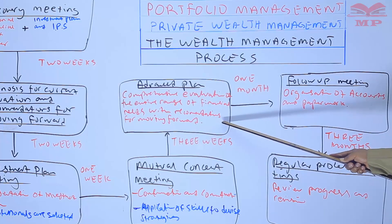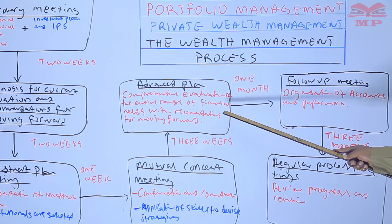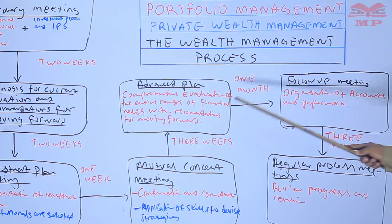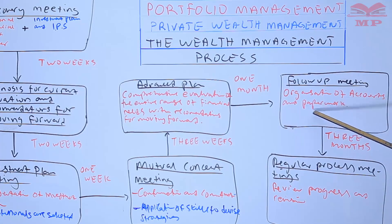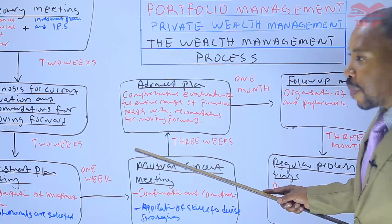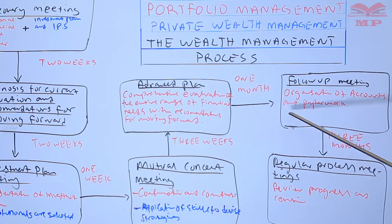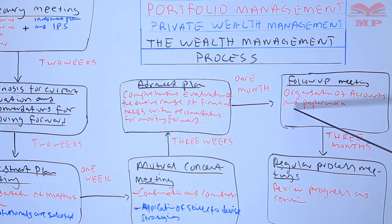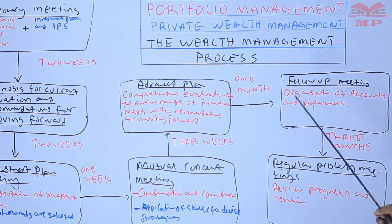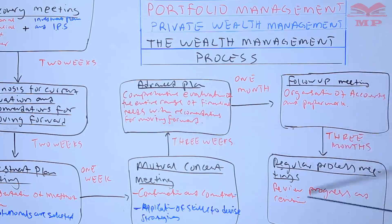At this step, they have already started the process of including the client into the portfolio. Under the follow-up meeting, the organization of accounts and paperwork is done — for example, whether you'd prefer to receive statements on a monthly or two-month basis. The portfolio has already been formulated by the investment managers, and once funds have been transferred, the follow-up meeting and the regular process meetings usually take three months. Here they formulate and invest in the strategies agreed upon, and regular reviews are done every three months, at which point rebalancing of the portfolio takes place.